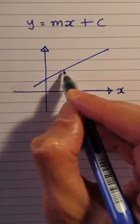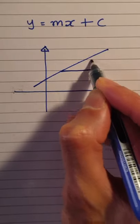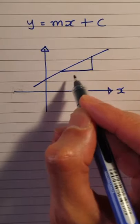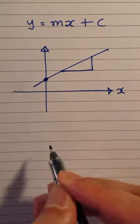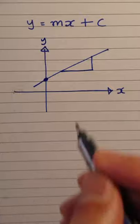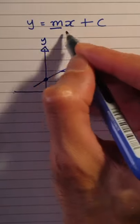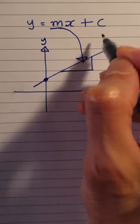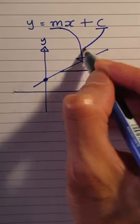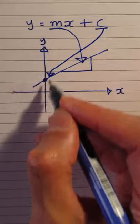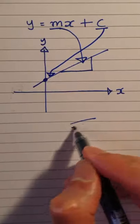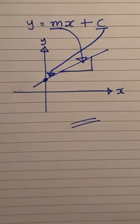The gradient will be the slope of this line, and the y-intercept will be where the line crosses the y-axis. So the m represents the gradient, and the c represents where the line crosses the y-axis, and this is y equals mx plus c.